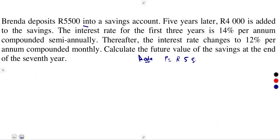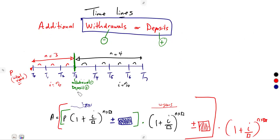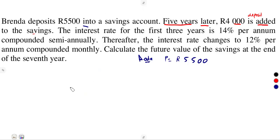Five years later, along the period of saving, $4,000 is added to the savings. That's a deposit — remember, a deposit is positive, something that is being added. So Brenda deposited $4,000 five years later.